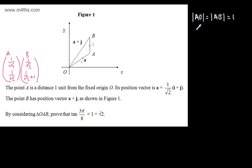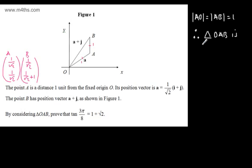Therefore, if these are both 1 unit, we've got an isosceles triangle. We can say, therefore, triangle OAB is an isosceles triangle.